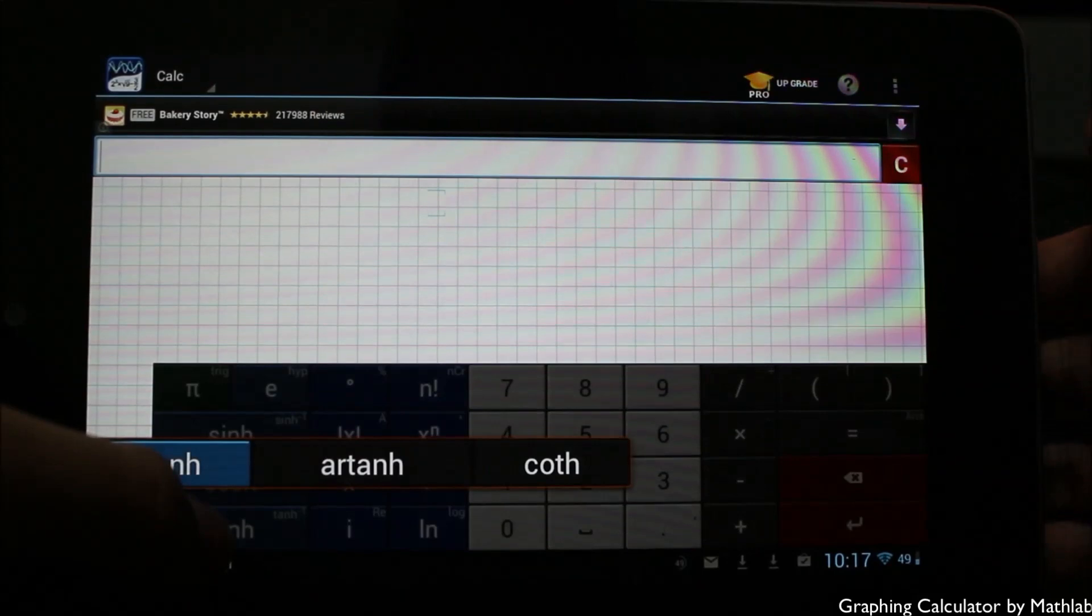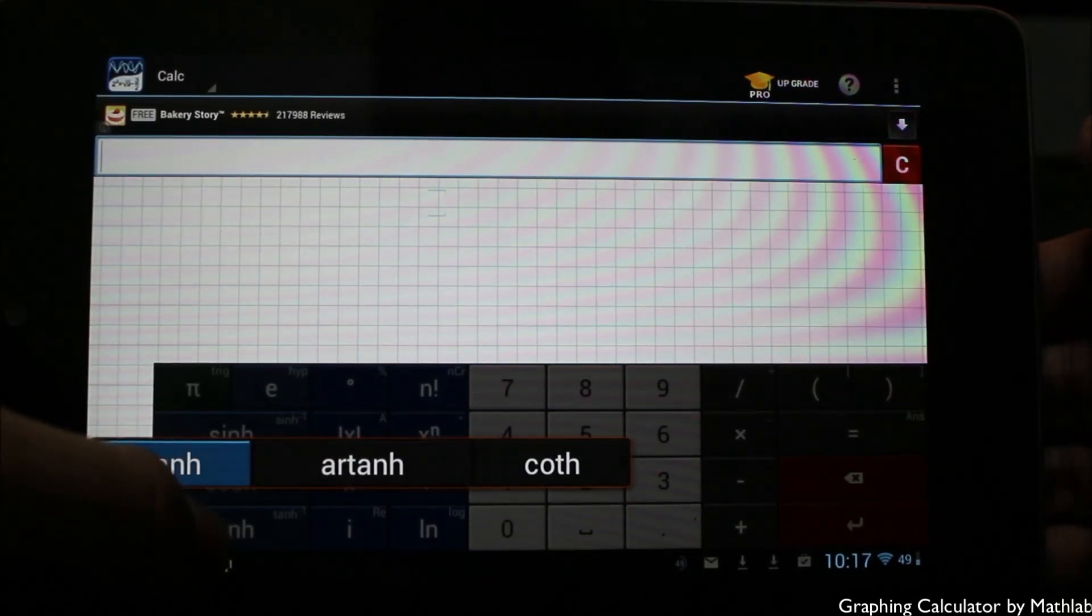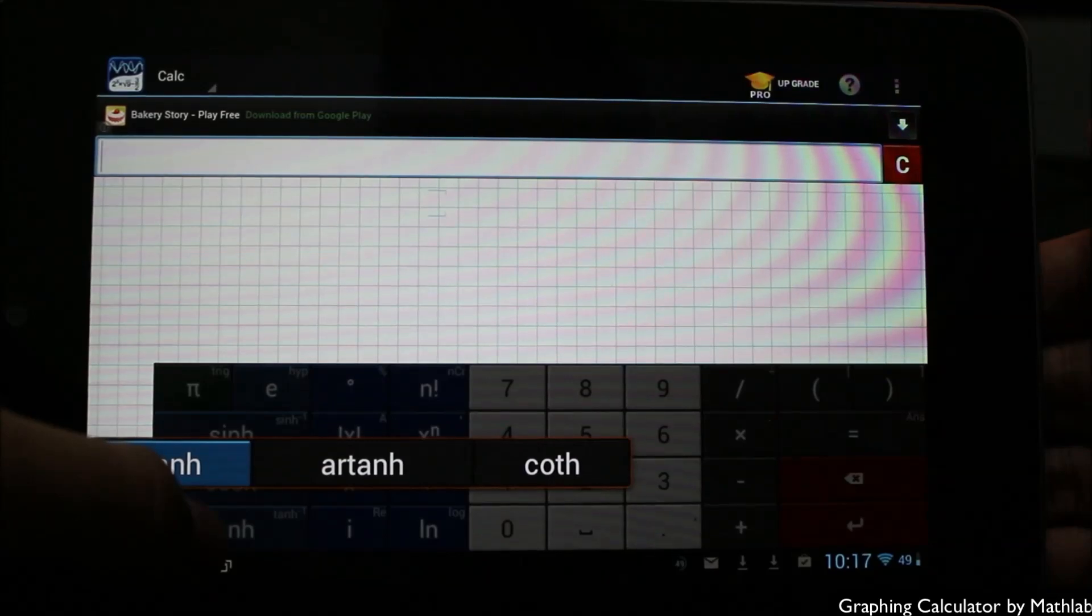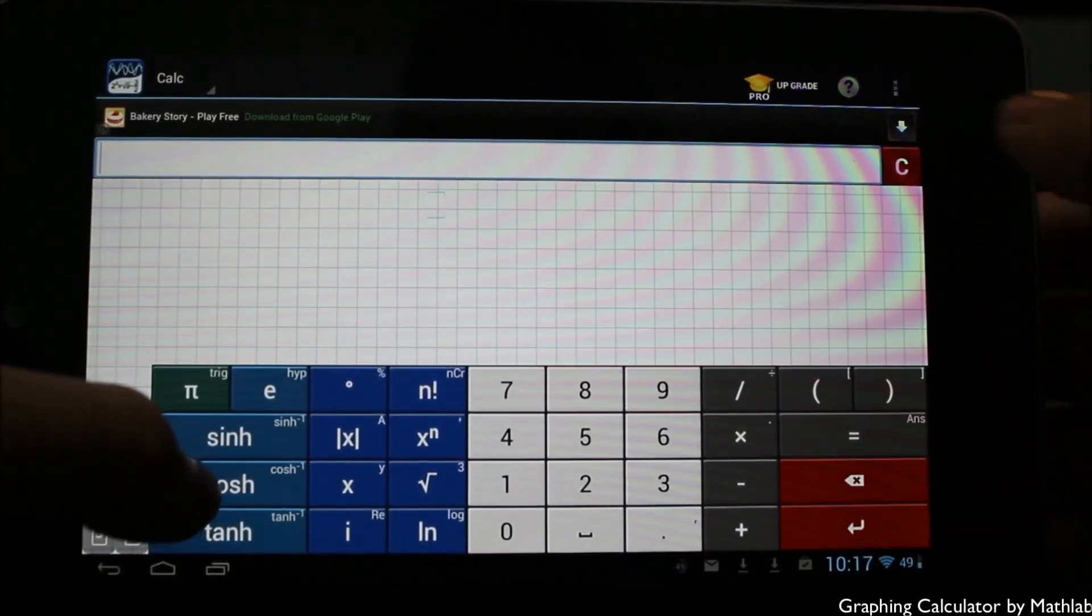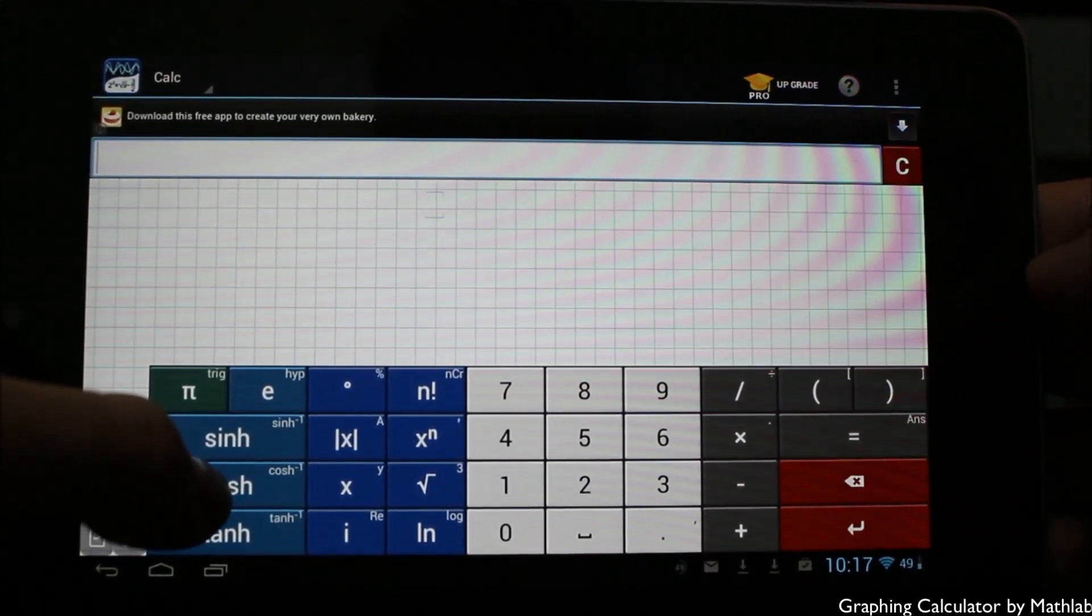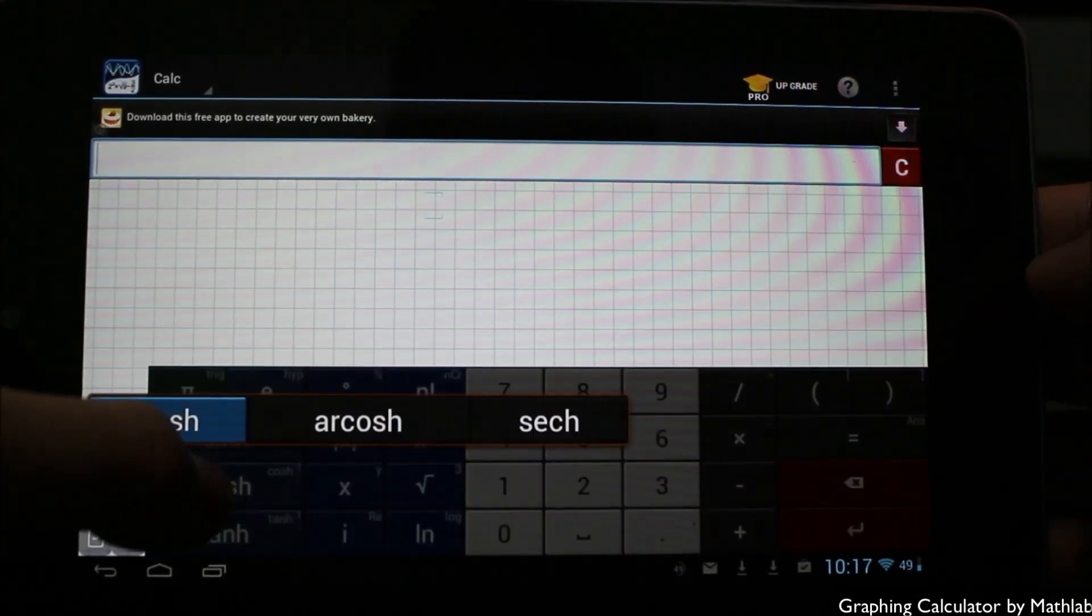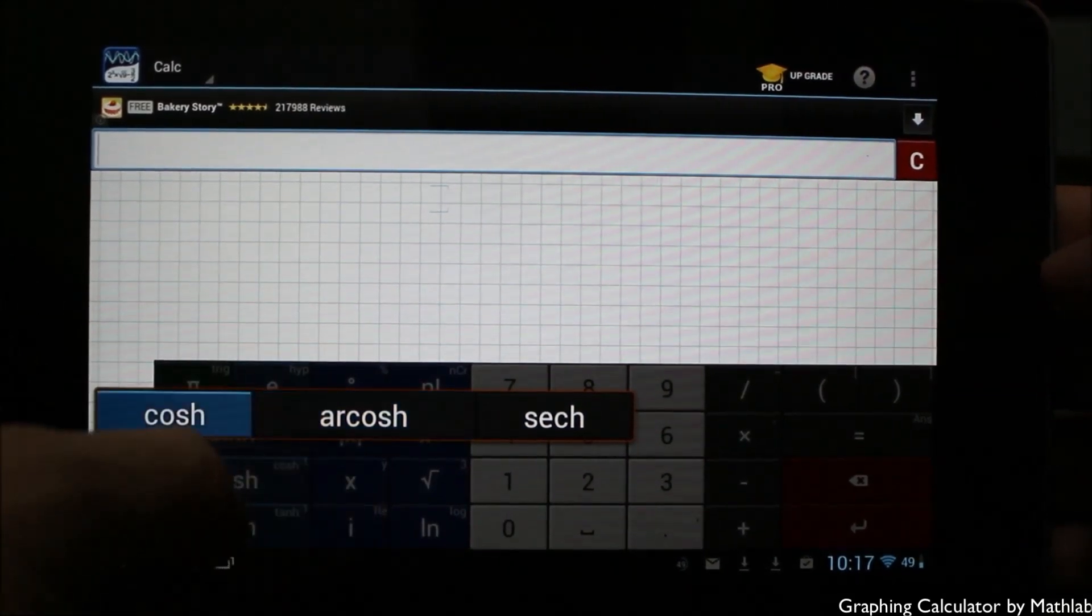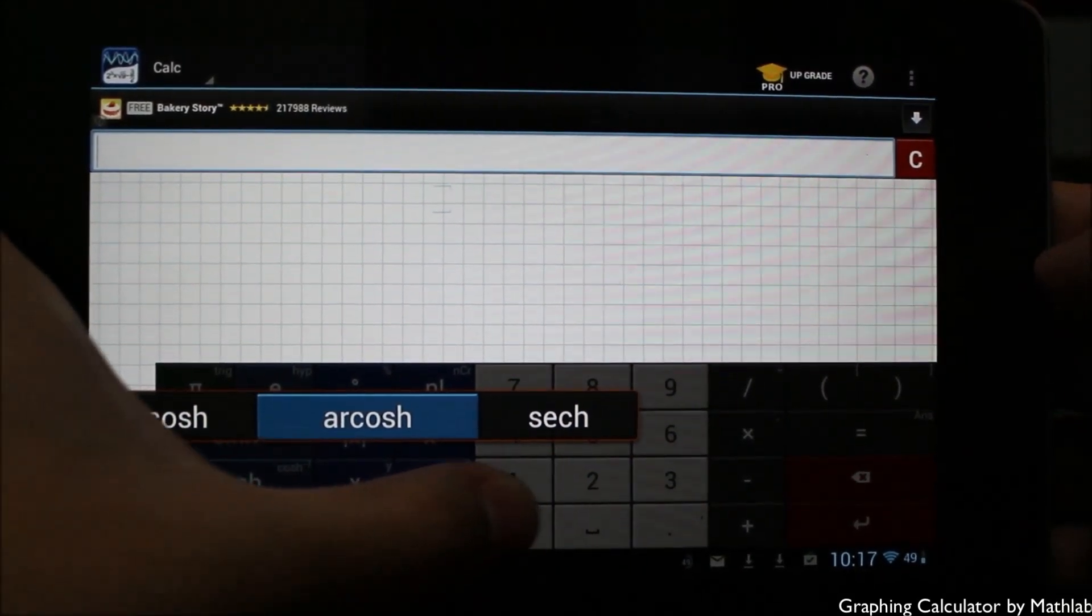I can simply drag left or right to get to those options. The same thing would be for cosine or tangent. If I hold those, you can see I get arc tangent, cotangent also available just by holding down on that one button. A lot of these act as double buttons just by holding onto them.